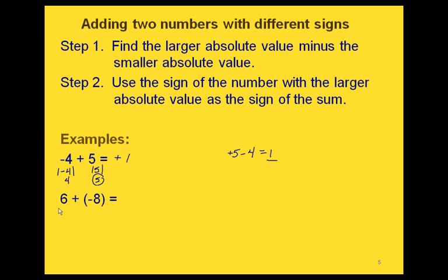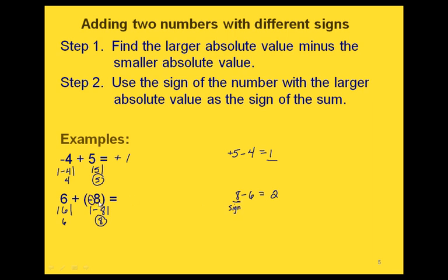Here's another example. The absolute value of 6 is 6, and the absolute value of negative 8 is 8. So the 8 has the larger absolute value. That means we find 8 minus 6, which is 2. Then for our final answer, we go back and look at the sign of that number in our original problem. The sign for that was negative, so our final answer is going to be negative 2.